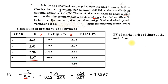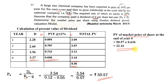This is the market price of the share at the end of the fourth year, but we need to find its present value today. The present value of the market price at the end of the fourth year uses the year-four PV factor of 0.636. So 50.57 × 0.636 gives a PV of 32.16 rupees.